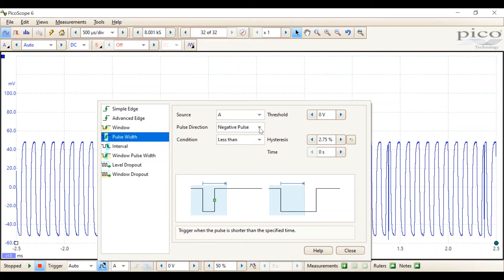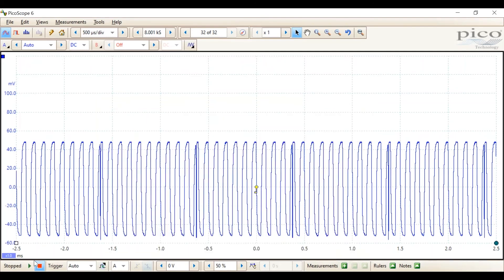Select pulse width. It's a negative going pulse. It could be a positive going pulse as well. And the condition we're looking at is less than 50 microseconds. We close that. And we start the trigger.